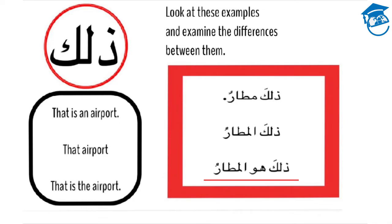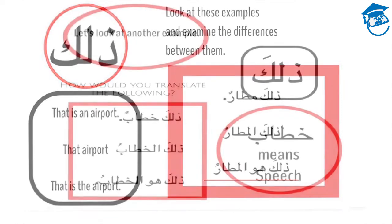In the third example, we've added huwa — the word for he or it in Arabic — in between valika, the ism el-ishara, and el-mataru, the singular definite masculine noun. Here it becomes a sentence again. Valika huwa el-mataru means that is the airport.